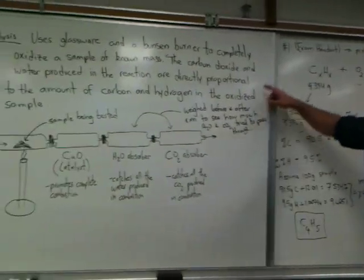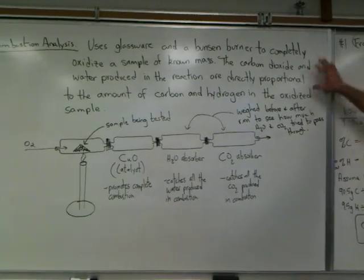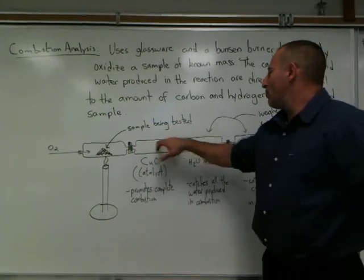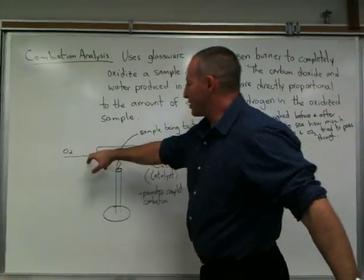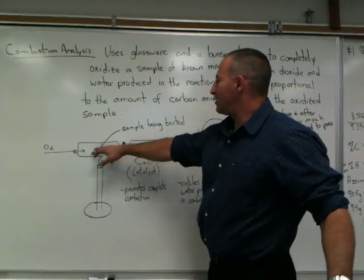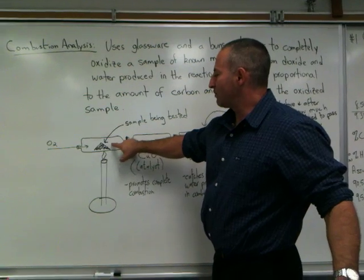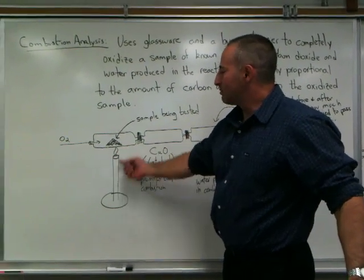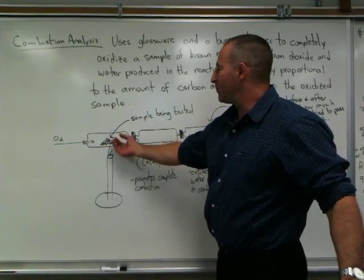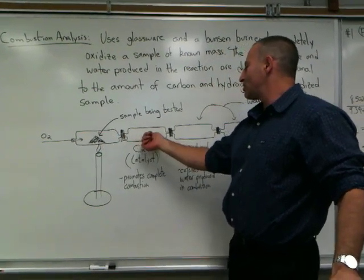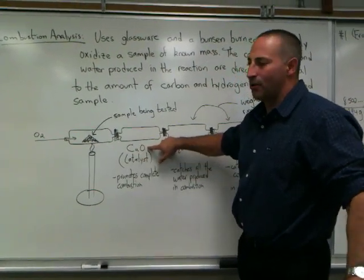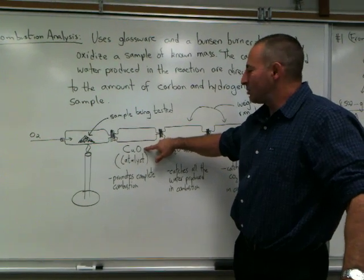So a typical combustion analysis apparatus had three or four tubes, all connected. On one end they would feed in oxygen and the sample that had to be burned was placed in the first tube. This is a Bunsen burner that heats the sample. As the sample combusts, the hot gases go through this tube. This tube has some copper oxide catalyst which helped ensure that the combustion proceeded 100%.